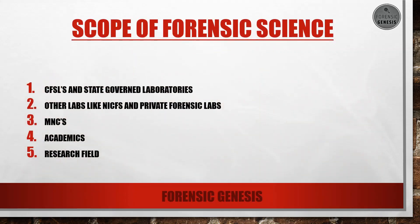Scope of forensic science: You can apply for jobs at CFSLs and state government laboratories, other labs like NICFS, and private forensic labs. You can also work with MNCs, in academics, or in research. There is also an option to go into the IB (Intelligence Bureau) and CBI (Central Bureau of Investigation). If you are interested in teaching, you can apply for posts like associate and assistant professors in government as well as private universities.